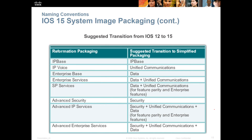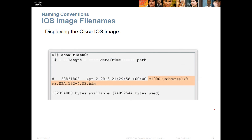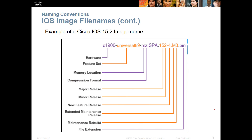Here's the packaging again: IP base, voice, enterprise base — as you need things, you get the appropriate ones. This is trying to simplify the comparison between IOS 12 and IOS 15 licensing families. Here's how you see your licensing — if you do a 'show flash,' it should show you what licensing you have. For example: universal, K9, MZ, SPA, 152-4M3. These represent: hardware, feature set, memory location, compressed format, major release, minor release, feature extended maintenance, and file extension.